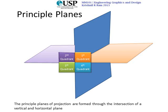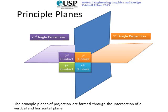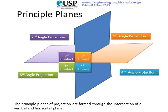Whatever is projected onto the plane in the first quadrant is called first angle projection. Whatever is projected in the second quadrant is called second angle projection. Whatever is drawn in the third quadrant is called third angle projection, and whatever is projected onto the fourth quadrant planes is called fourth angle projection. HP stands for horizontal plane and VP for vertical plane.